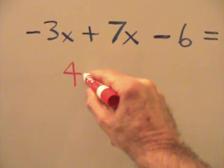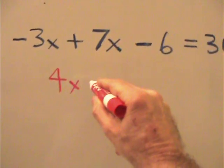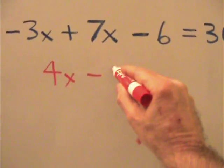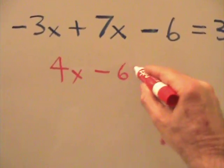We're going to add our x, continue to rewrite the problem: 4x minus 6 equals 30.